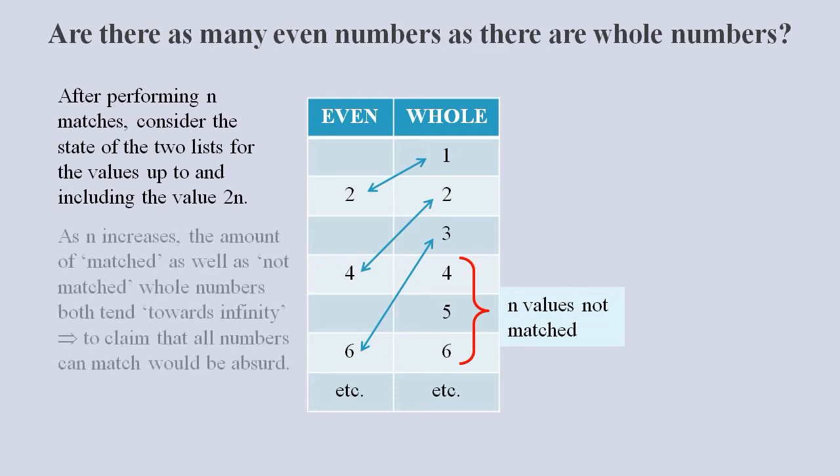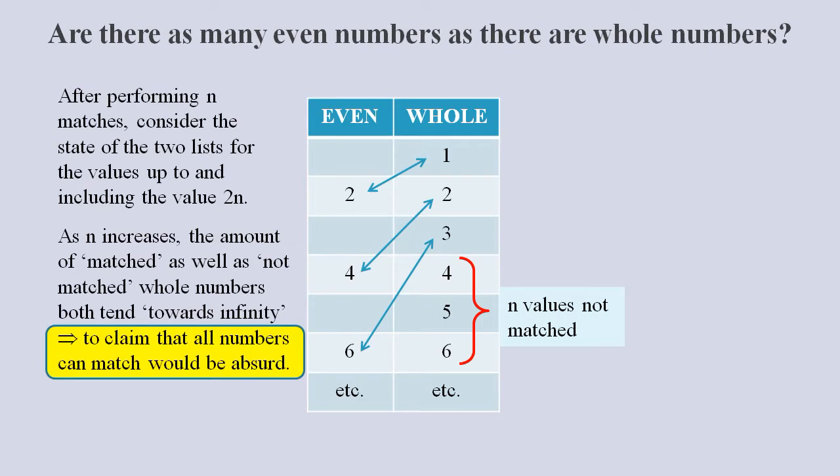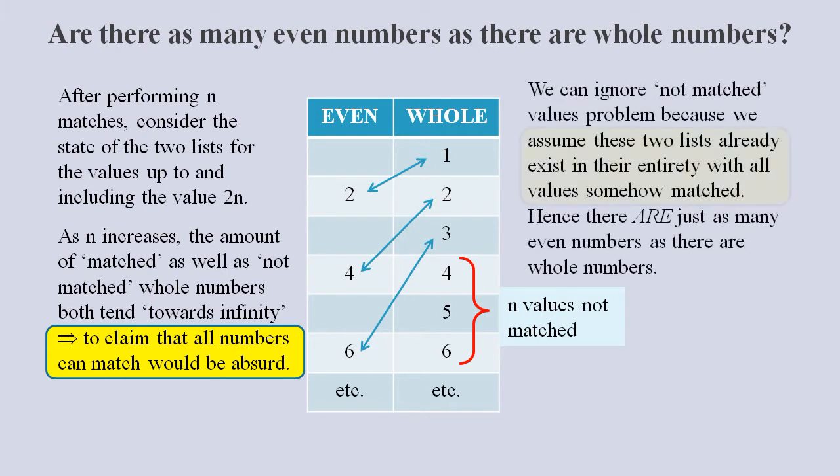If we continue the matching process, then we might say the number of matched whole numbers tends towards infinity, but so does the number of not matched whole numbers. So it is obviously impossible to match all of the whole numbers. But by Cantor's logic we can simply ignore the not matched problem and just assume that the two lists somehow exist in their entirety with all values in both lists inexplicably completely matched.